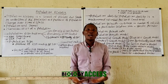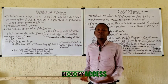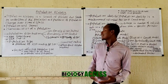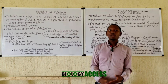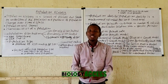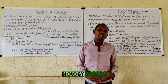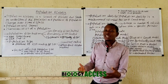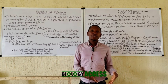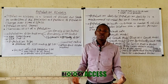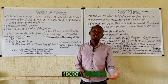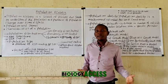Organisms that exhibit territorial behavior demarcate a particular region for themselves and don't allow other males of the same species to inhabit that area. Another factor that can lead to uniform distribution is exhibited by some plants which secrete certain chemicals that can prevent plants of the same species from growing in that particular area.